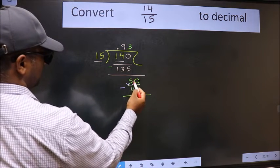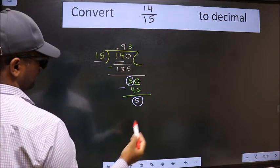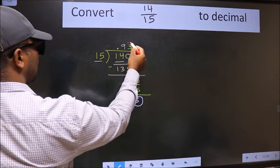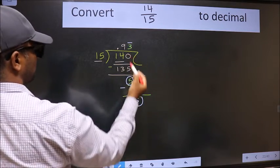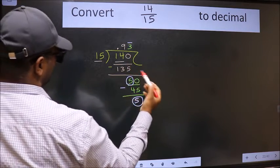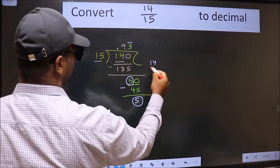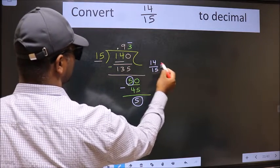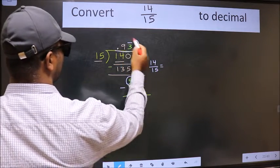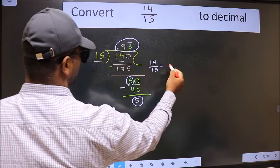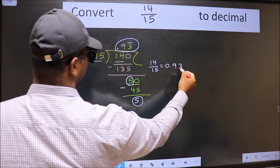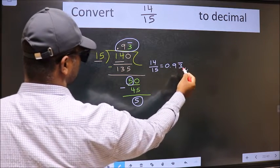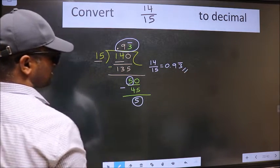Earlier also we got 5, which means we get a bar on this number. Therefore the decimal of 14 by 15 is 0.93 with a bar on this number. This is our answer.